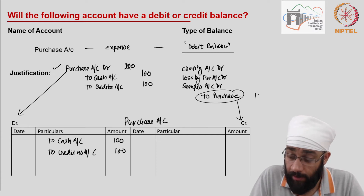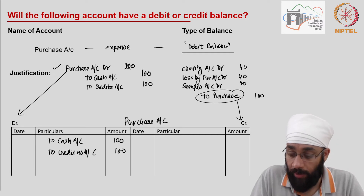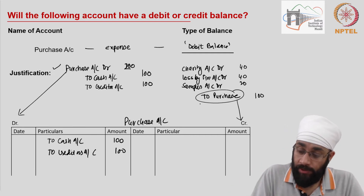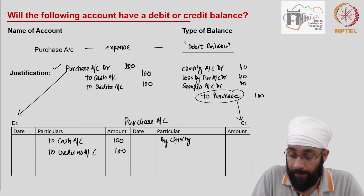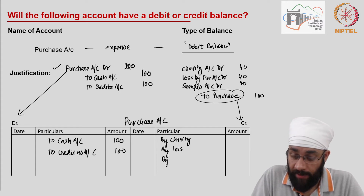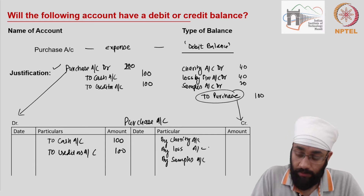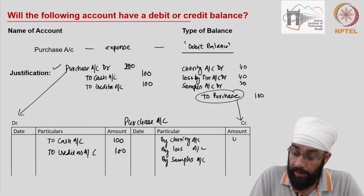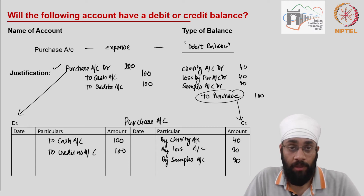Let's assign amounts: 100 on the debit side, and on the credit side — charity 40, loss by fire 20, and free samples 40. So on the credit side we have entries for charity, loss by fire, and free samples accounts.